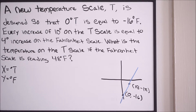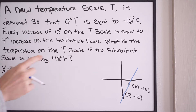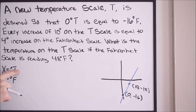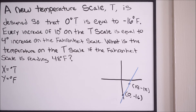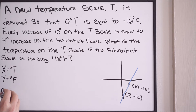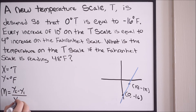The goal is to find the equation of this line, because once we have it, we can plug in the information and solve for degrees T. To find the equation we need the slope first. The slope formula is: slope equals (y2 minus y1) divided by (x2 minus x1).